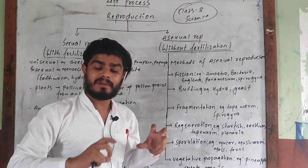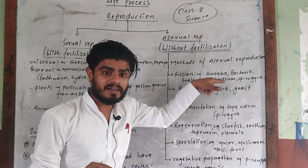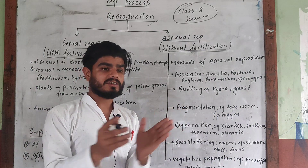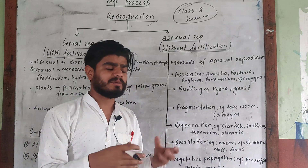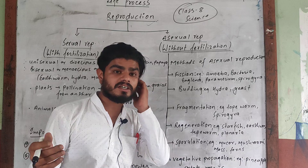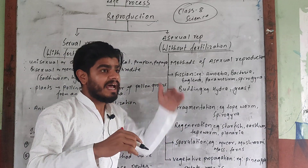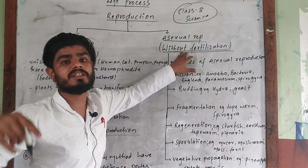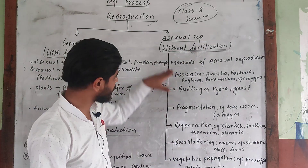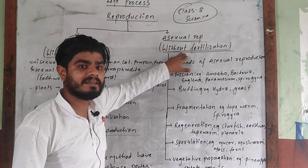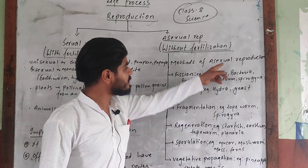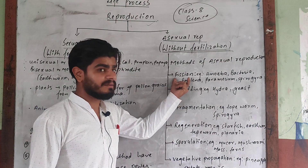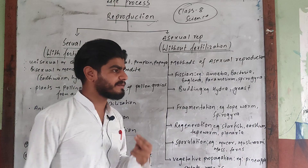I'm going to talk about the methods of asexual reproduction, which can occur in animals or plants. With fertilization, the generation continues. The best method of asexual reproduction in plants and animals is fission. The first method is fission, which has two types: binary fission and multiple fission.